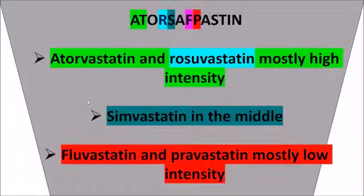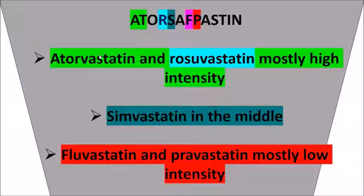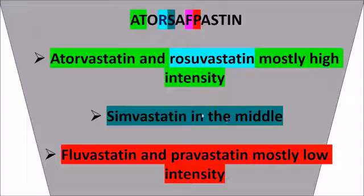To remember statin intensities, consider this mnemonic: atorvastatin 80mg, 40mg, and 20mg all reduce cholesterol by more than 40% and are high-intensity; even the 10mg reduces above 30%. Simvastatin 80mg is high-intensity, while 40mg and 20mg are medium-intensity and 10mg is low-intensity (21–30%). Pravastatin is all low-intensity — even the highest strength 40mg reduces less than 30%. Fluvastatin is mostly low-intensity except its highest strength which is medium-intensity.